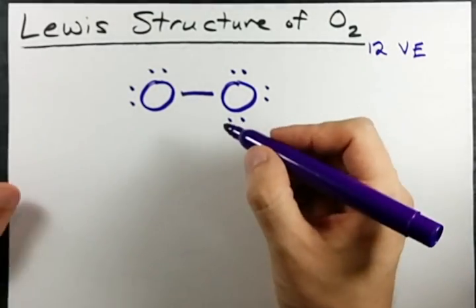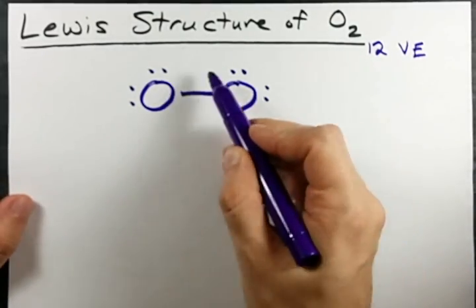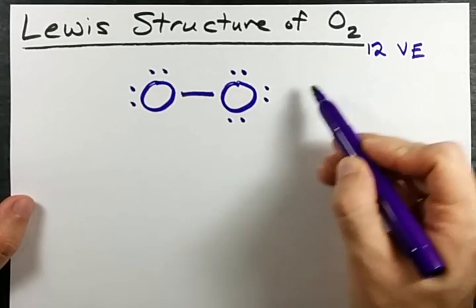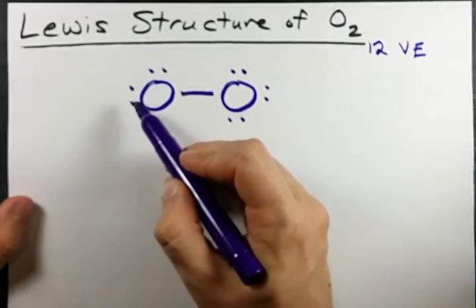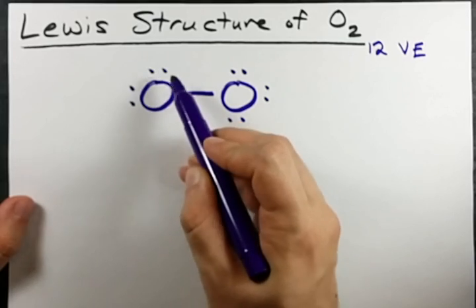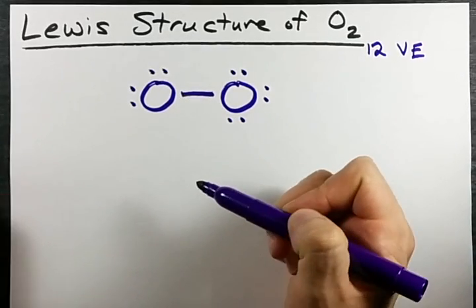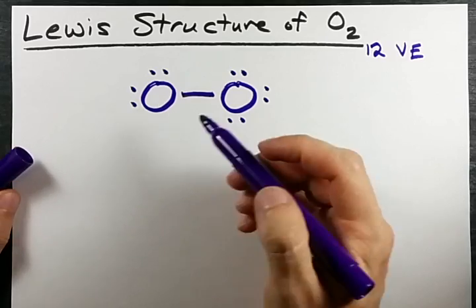Check. But it doesn't satisfy the octet rule. This oxygen has eight electrons around it. Good. But this oxygen only has one, two, three, four, five, six electrons around it. In order to make it eight,